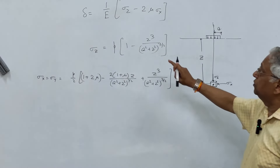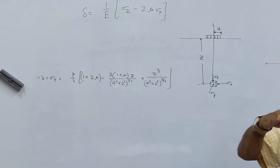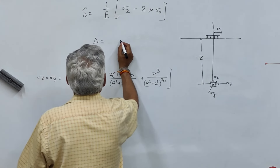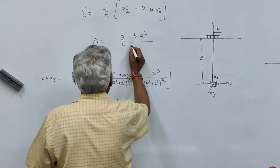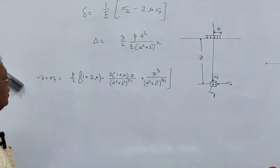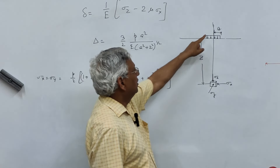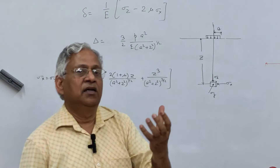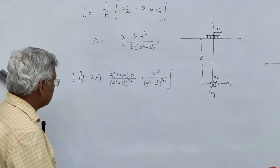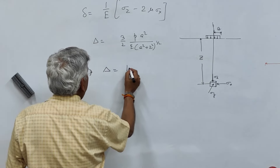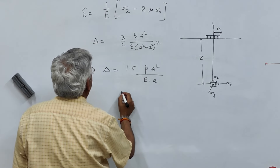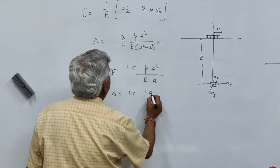If you substitute the values of sigma Z and sigma X in this equation and then integrate over the range Z to infinity, substituting mu equal to 0.5, you can find the deflection at depth Z due to pressure at the surface. That deflection equals (3/2) · P · A² / [E · (A² + Z²)^(1/2)]. If you set Z equal to zero, you get the surface deflection: delta equals 1.5 · P · A / E.